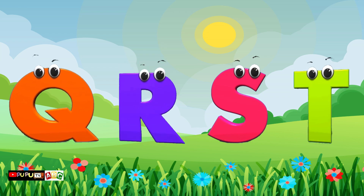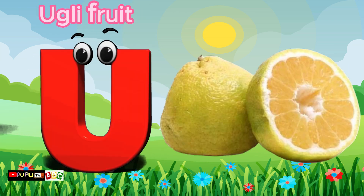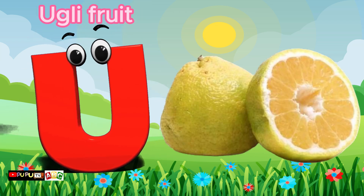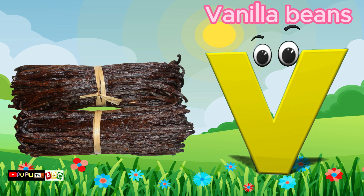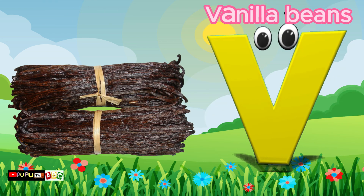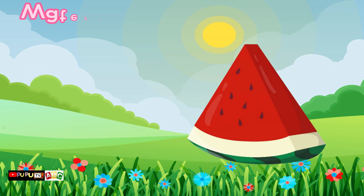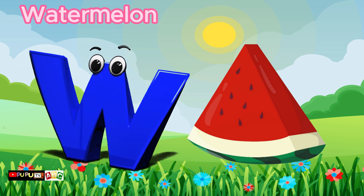U is for Ugly Fruit. Ugly Fruit. V is for Vanilla Beans. W is for Watermelon. Watermelon.